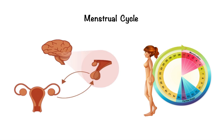The menstrual cycle is defined by the regular, repetitive monthly occurrence of ovulation throughout a female's reproductive life. The normal menstrual cycle results from a complex feedback system involving the hypothalamus, pituitary, ovary and uterus. The average length of the cycle is 28 days, but this can vary between individuals and from one cycle to the next.